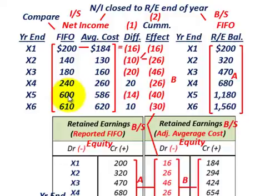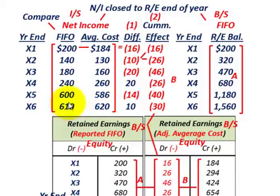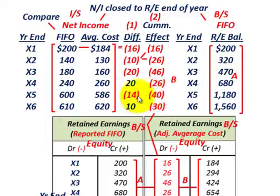For year X5, FIFO was $600,000 versus average cost of $586,000, a reduction of $14,000. Adding that to $26,000 from the end of year X4, the cumulative effect at the end of year X5 is $40,000. Then for year X6, FIFO was $610,000 and average cost was $620,000 — an increase of $10,000. So the cumulative effect drops from $40,000 to a negative $30,000 at the end of year X6.